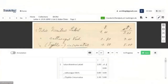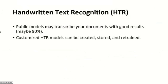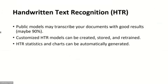One useful feature is that when one has tabular text in manuscripts, one can apply tabular structures inside Transkribus to that text, and those can be exported as tables. A good thing about Transkribus is that there are readily available public models that might transcribe your documents with good results, maybe up to 90% accuracy. Customized HTR models can be created, stored, and retrained as needed, and the HTR statistics and charts can be automatically generated and reused for publications.